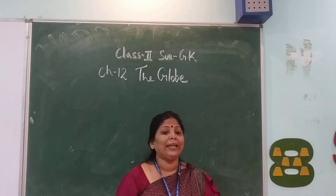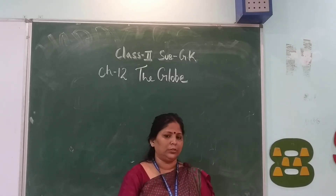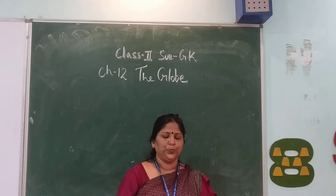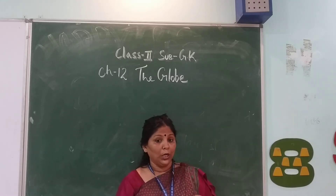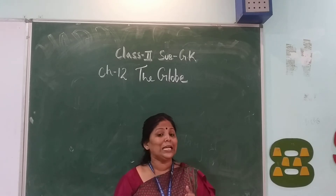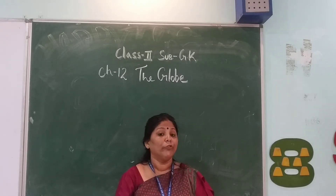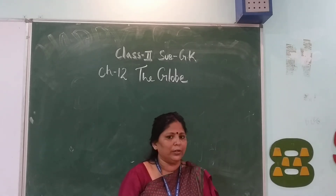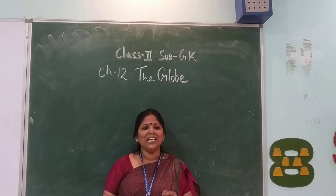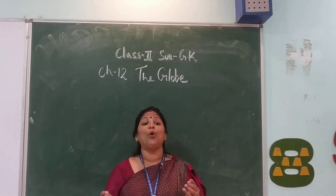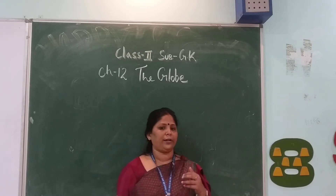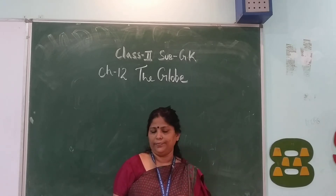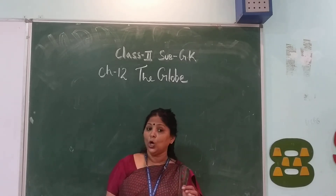A globe is a spherical model of Earth. The word globe comes from the Latin word 'globus', which means 'the sphere'. In simple language, we can say a globe is a ball-shaped object with a map of the world on it.